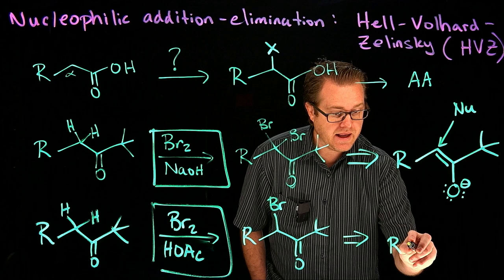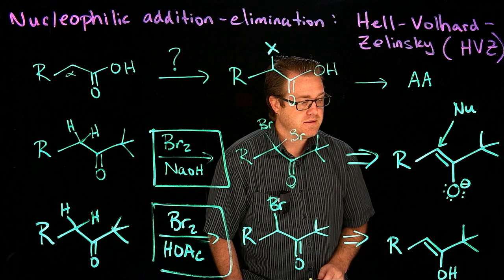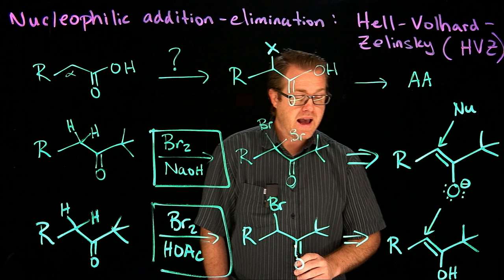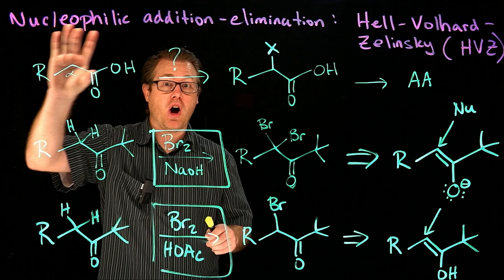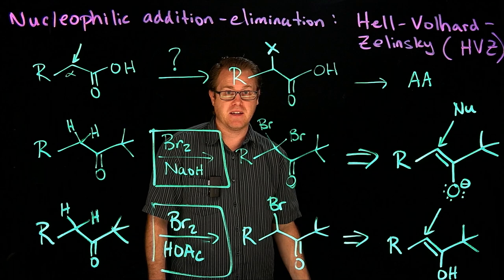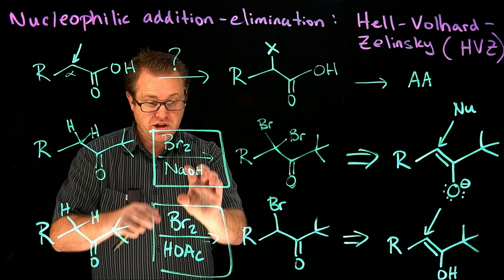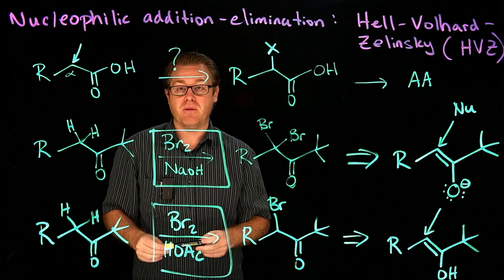Under acidic conditions, what we're going to need is the enol — same concept, just a little bit different. Under acidic conditions we generate the enol; under basic conditions we generate the enolate. Both of those alpha carbons are nucleophilic, and that's what we need. For the HVZ reaction we also need to get the alpha carbon nucleophilic through an enol or enolate, but these conditions with a carboxylic acid do not get us that enol or enolate.